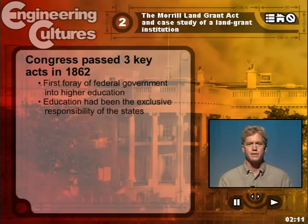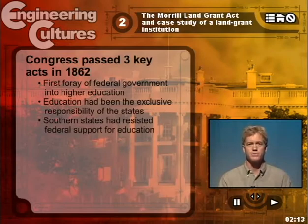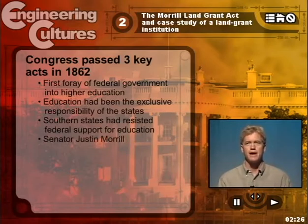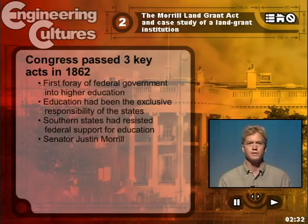This resistance came especially in the South, where states' rights were paramount. Well, in 1862, the South was gone — the South had seceded. And Justin Morrill, a long-time advocate for federal support for public education, was able to make his move and get his interests greater visibility.